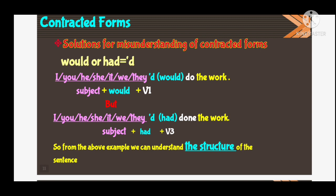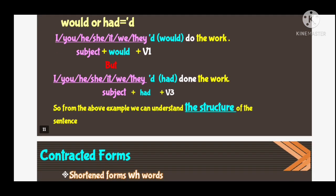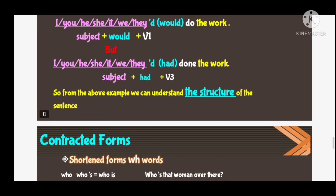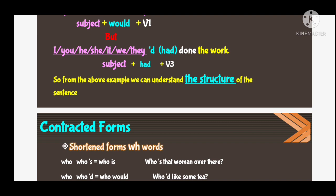Now, the next slide covers the solutions for misunderstanding contracted forms. 'Would' or 'had' equals having apostrophe-D: I, you, he, she, it, we, they apostrophe-D. For example: 'I'd do the work' — here I, you, he, she are all subjects. And 'I'd done the work' — here subject plus had plus V3 structure is there. So from the above examples, we can understand the structure of the sentences.